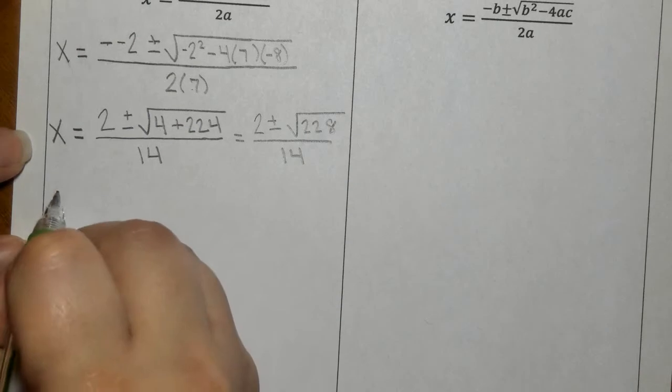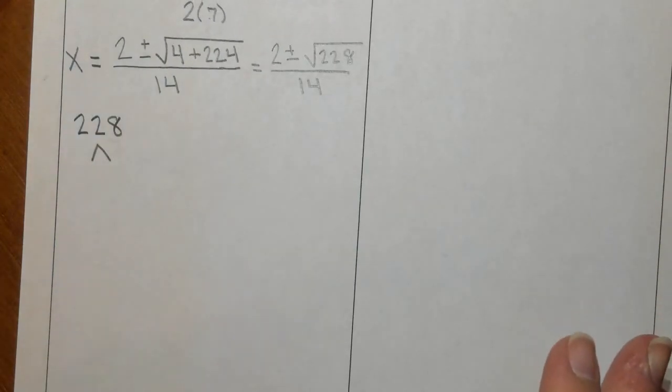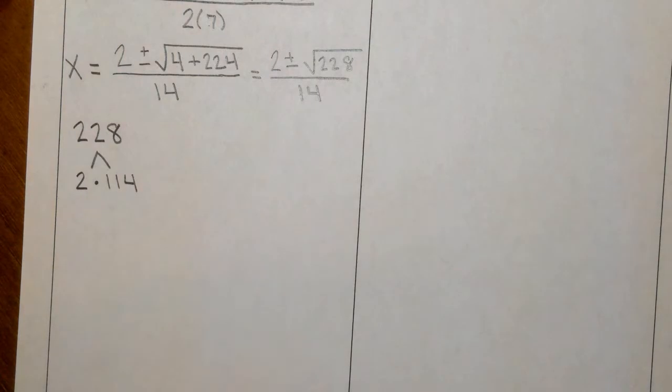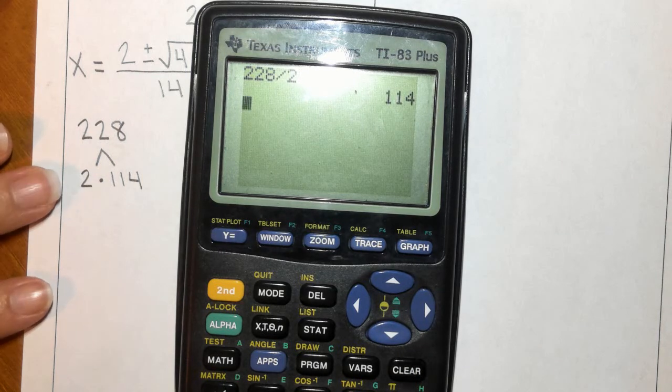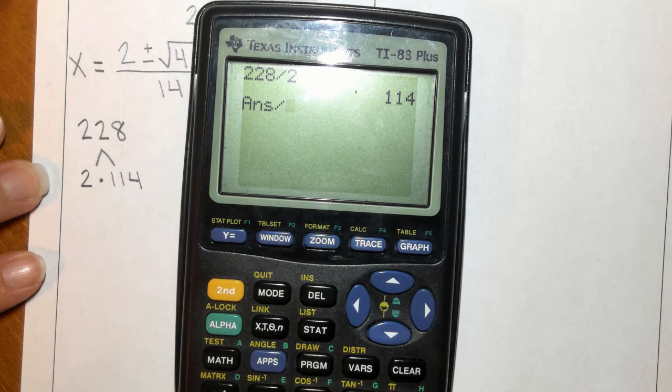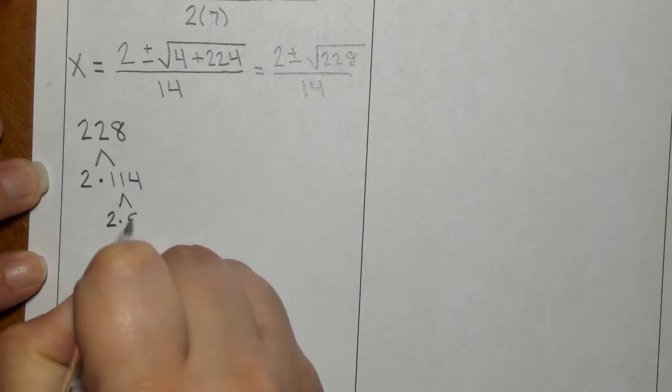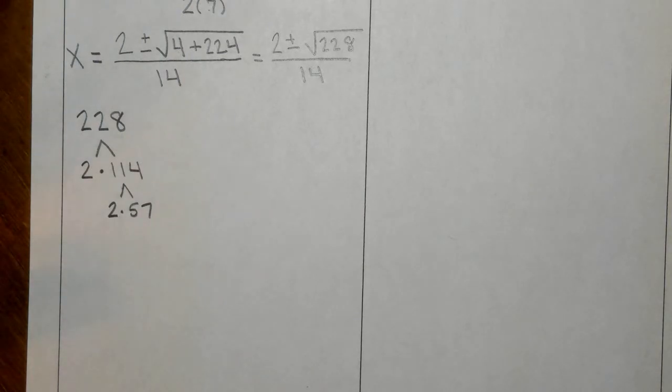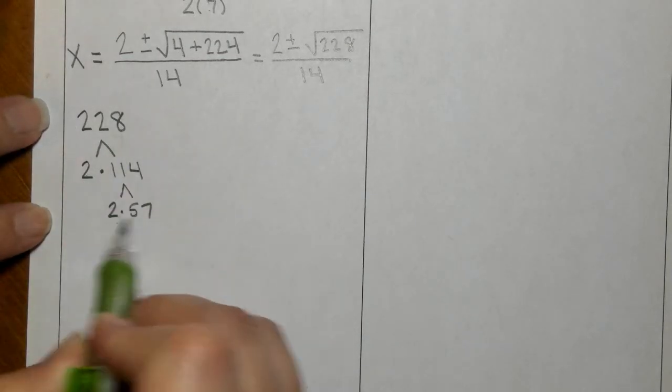So off to the side, I want to do a factor tree for 228. If you divide by two, we're going to get 114. I just took 228 divided by two. Now I know that 114 is divisible by two, so I divide it by two since it's even and get 57. This can break down to two and 57. Now 57 cannot simplify besides one. So I'm done with my factor tree. I have two, two, and 57.